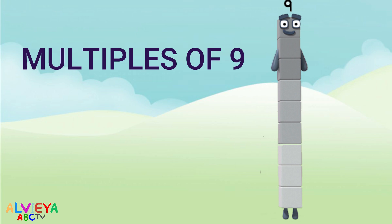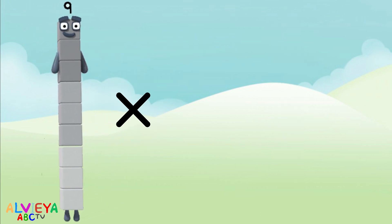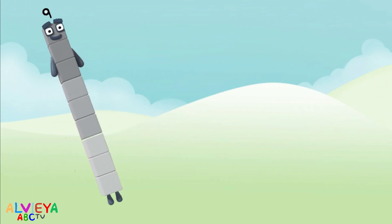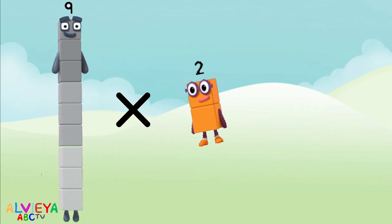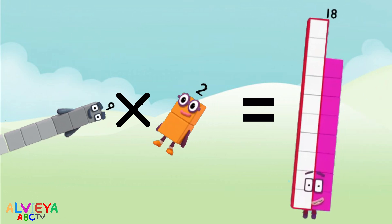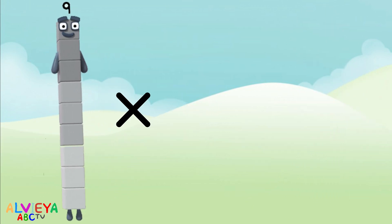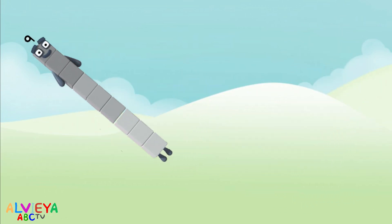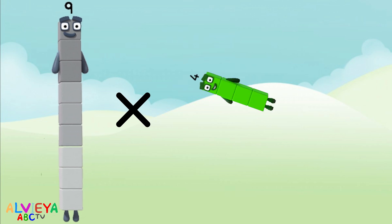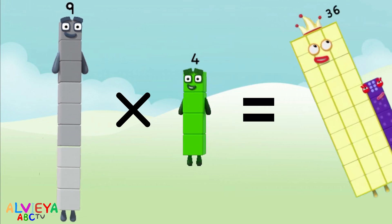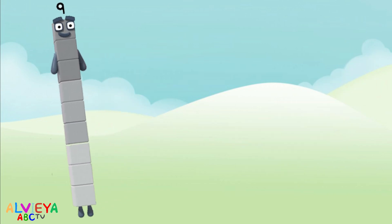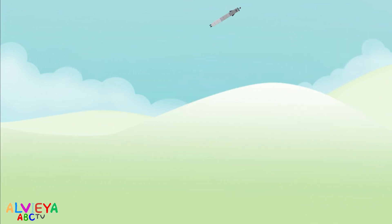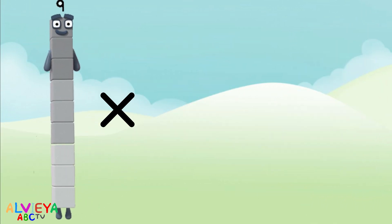Nine times one equals nine. Nine times two equals eighteen. Nine times three equals twenty-seven. Nine times four equals thirty-six. Nine times five equals forty-five. Nine times six equals fifty-four.